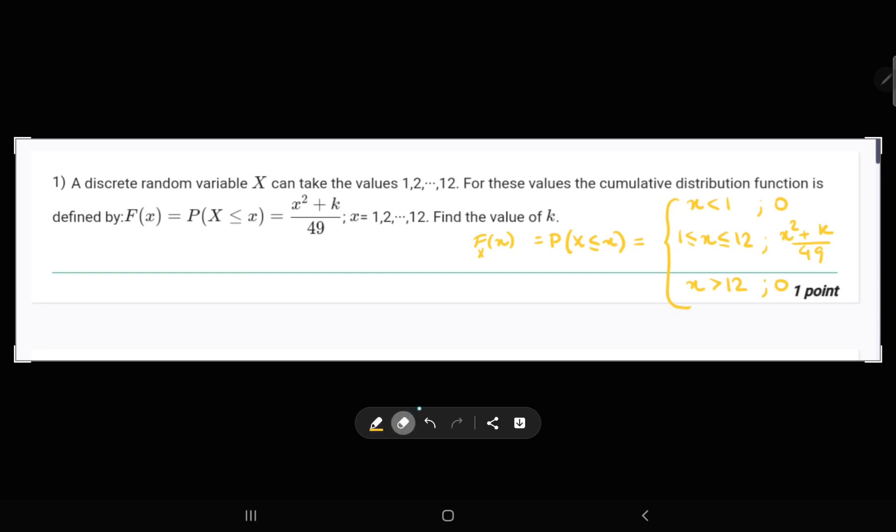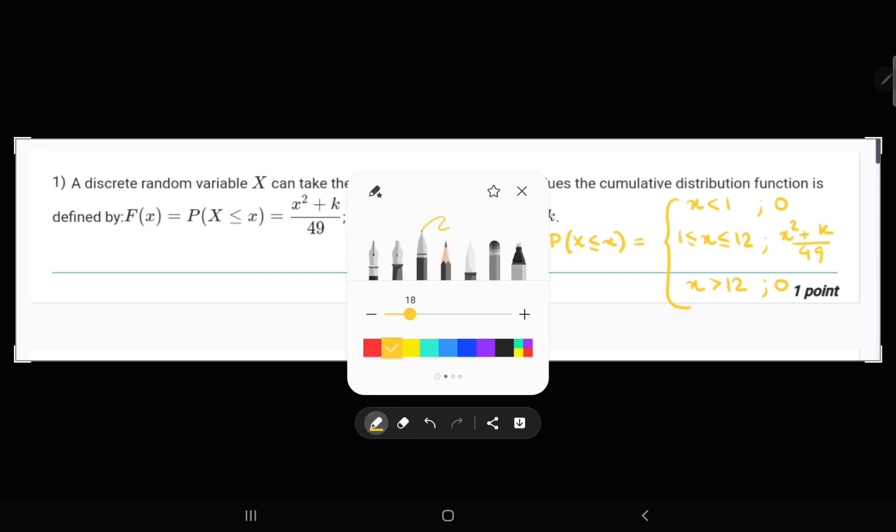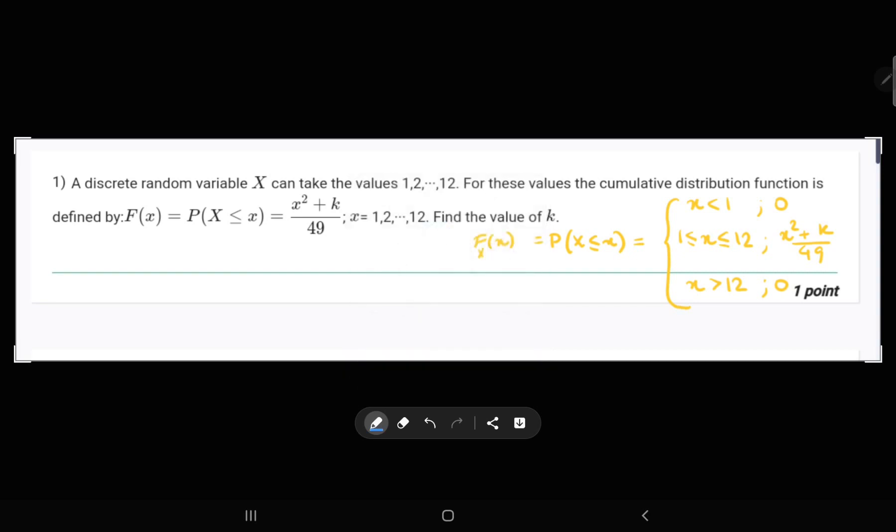We will be drawing a graph so that we can understand what we should do to solve this question. At x equals to 1, we will get value k + 1, putting value in this equation x as 1, so (k + 1)/49, so our respective point would be here.